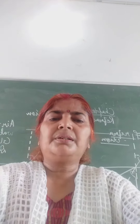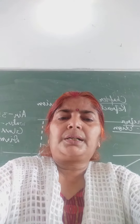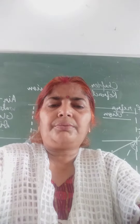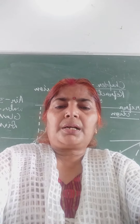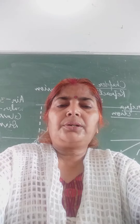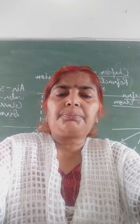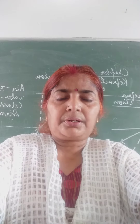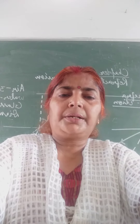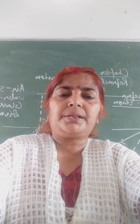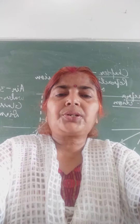Good afternoon children. Today we are going to start a new chapter: refraction and dispersion of light. In the previous class you have studied that light always travels along a straight path — it is called rectilinear propagation of light. You have also read that when light falls on any shining or polished surface, it is bounced back. It is called reflection of light.